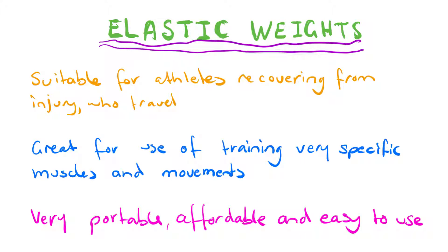Elastic weights are suitable for all athletes but particularly those recovering from injury or those travelling with access to very little equipment, as they're portable, affordable, and easy to use. They're often just a large piece of elastic from the physio or gym. Elastic weights are usually in the form of resistance bands — like a big rubber band or thick elastic — and are great for training very specific muscles and movements, making them ideal for rehabilitation.